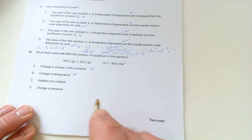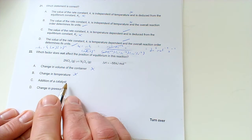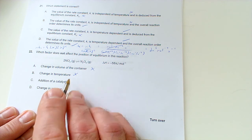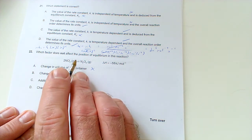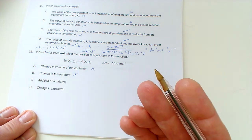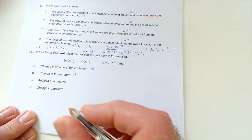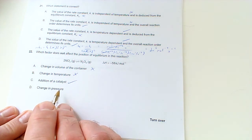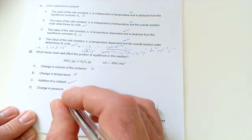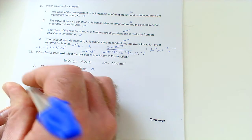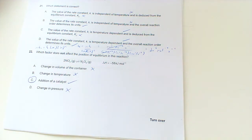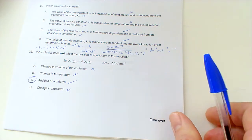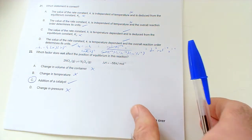Addition of a catalyst decreases the activation energy for both the forward and reverse reactions equally, so there is no effect on the equilibrium position — you just get there faster. Changing pressure, as discussed, would shift equilibrium to the side with fewer gas molecules. So the answer is C — the catalyst — because it makes both reactions faster equally.